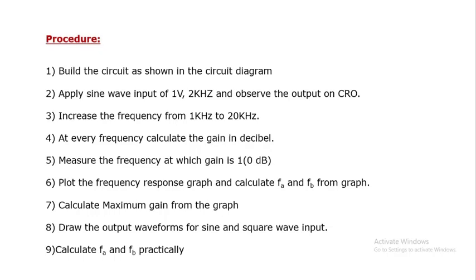The procedure to design and test the integrator: build the circuit as shown in the circuit diagram. Apply a sine wave input of 1 volt amplitude at 2 kilohertz frequency and observe the output on the CRO. Then increase the frequency from 1 hertz to 20 kilohertz and at every frequency calculate the gain in decibel — that is 20·log(V0/Vin). Measure the frequency at which gain is 1, plot the frequency response, and calculate fa and fb from the graph. fa is the frequency at which gain is reduced by 3 dB, and fb is the frequency at which gain is 0 dB. Compare practical values of fa and fb with the theoretical values.